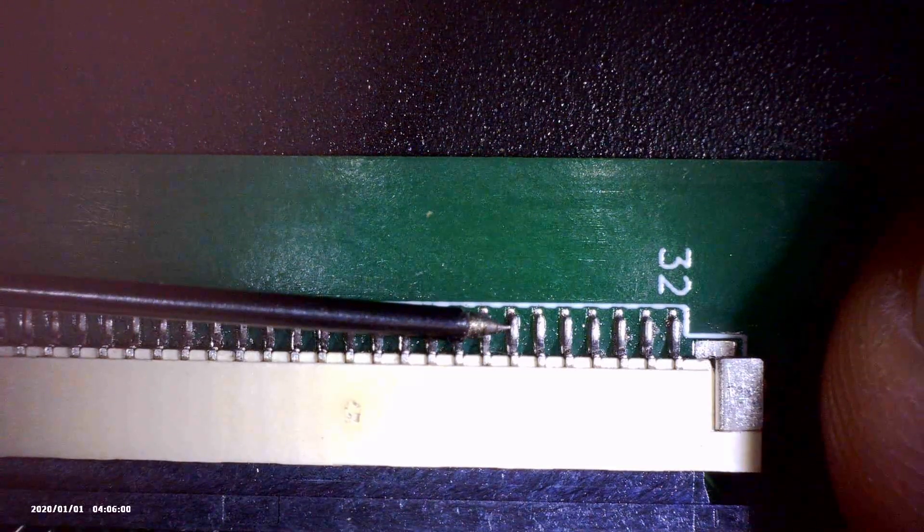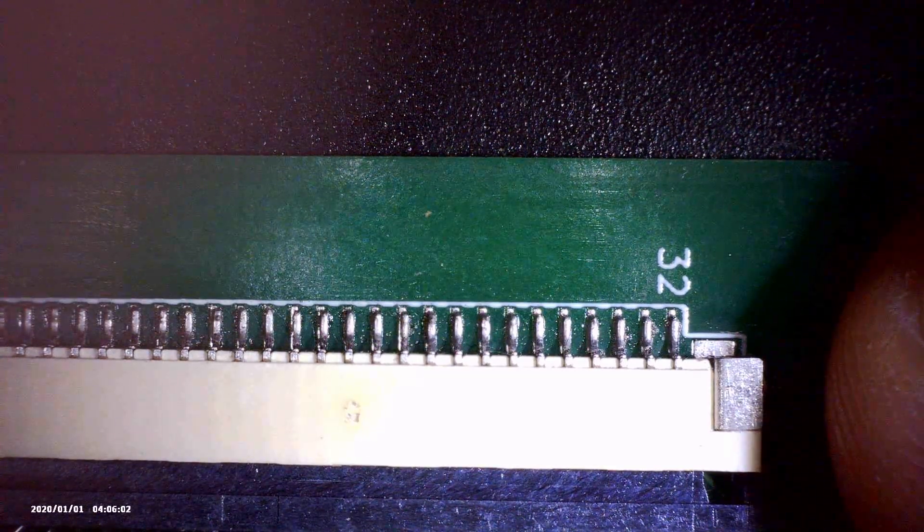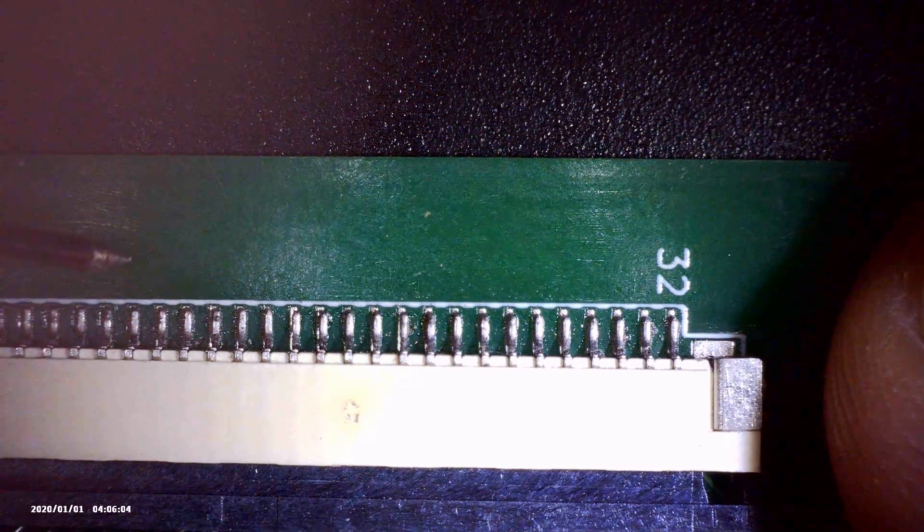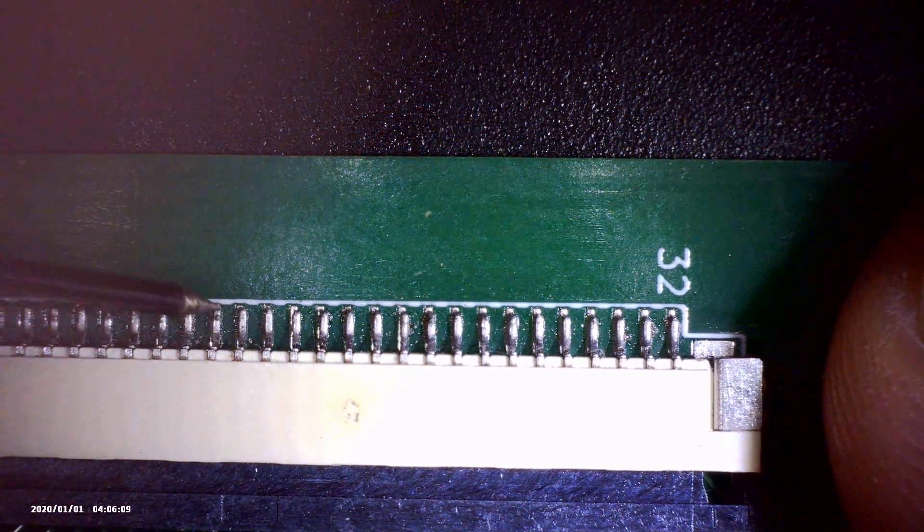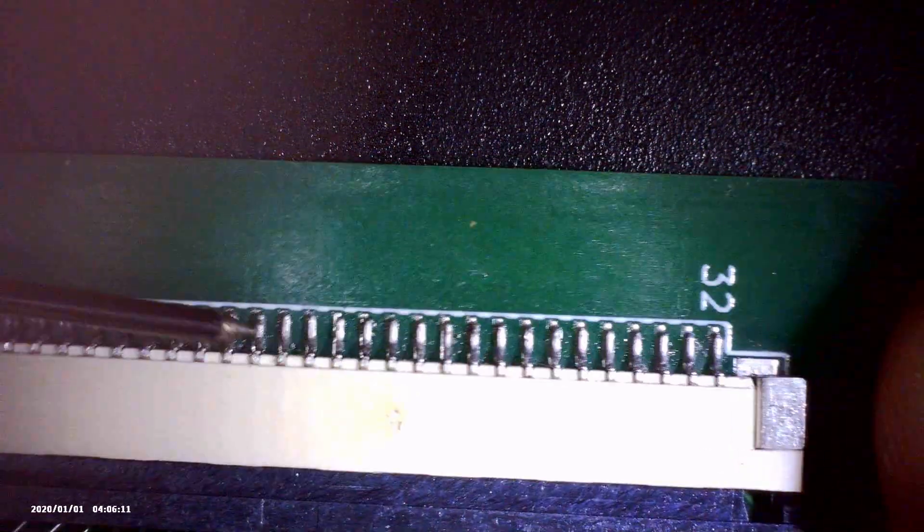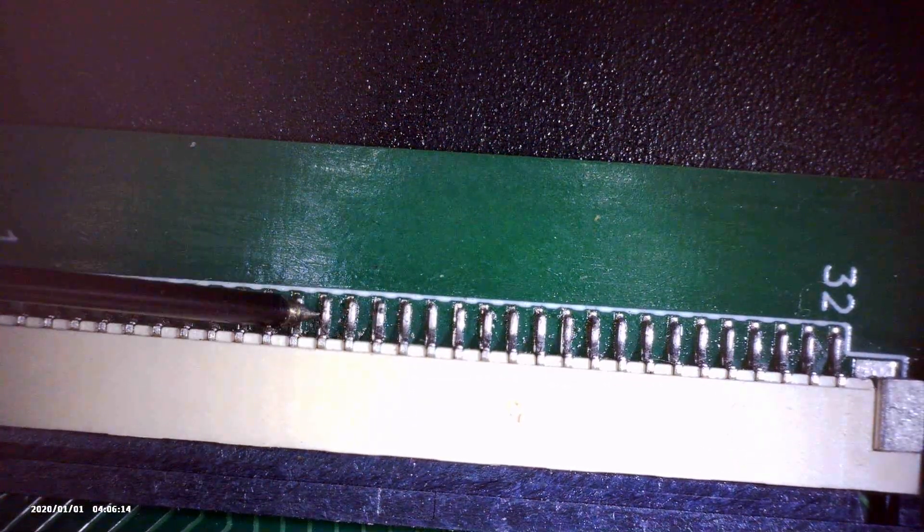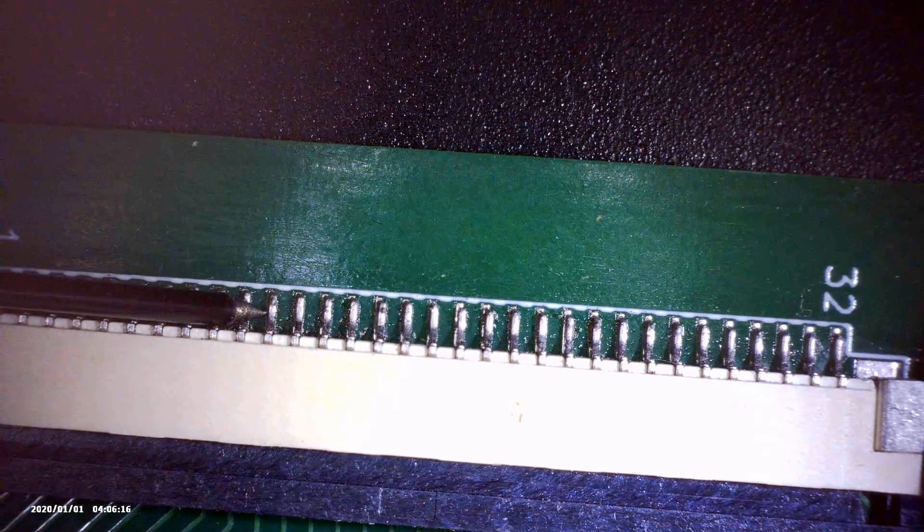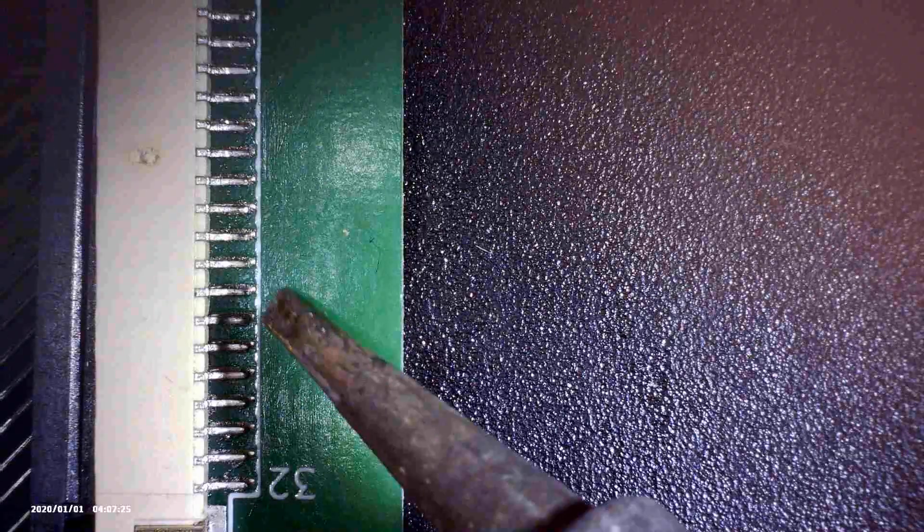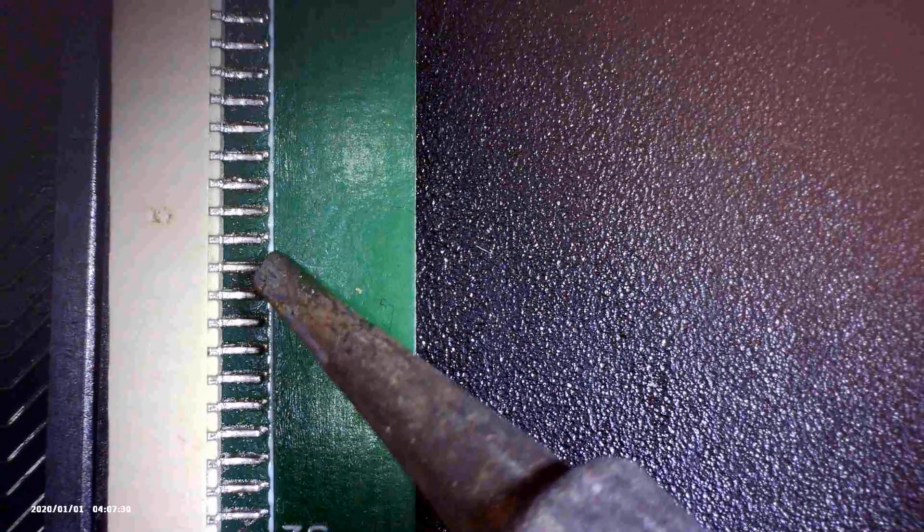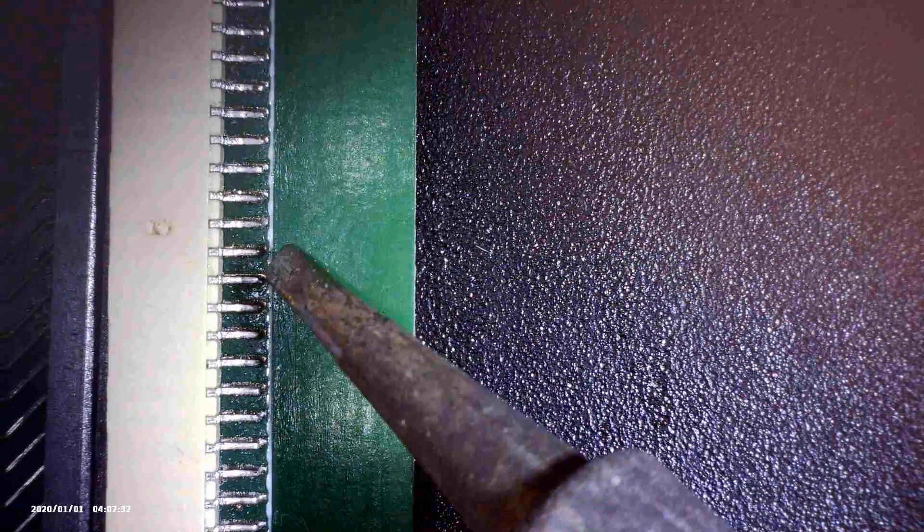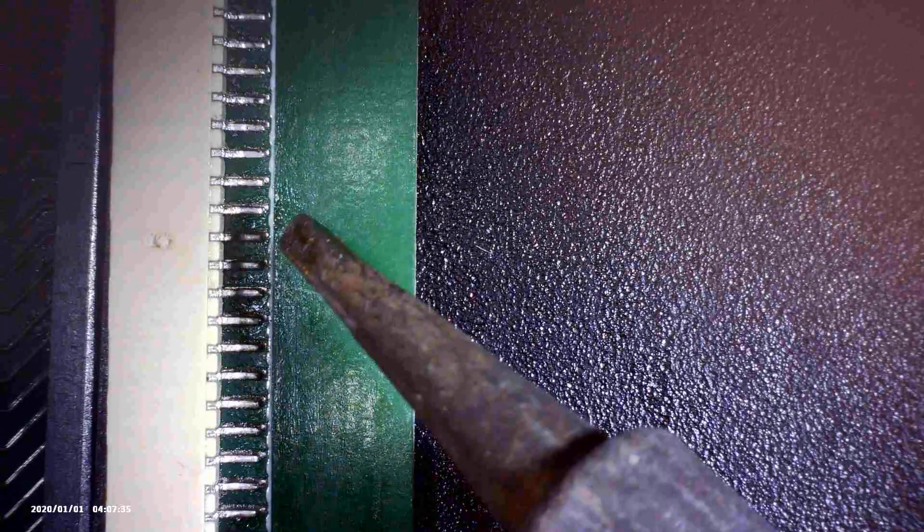Now give it a bit of a clean with IPA, get rid of the residue, and it's time to do the push test. So just pushing against each pin in turn, and you can see here that there's two pins which move, so they're going to need to be resoldered, but all the other ones look fine. I'm just going over the two pins that needed resoldering, and we're done.